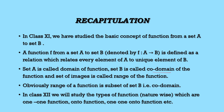Here, every element of A is important for set A, and unique element is important for set B. Set A is called the domain of the function, set B is called the co-domain of the function, and the set of images is called the range of the function. The range of a function is a subset of set B, that is, the co-domain.